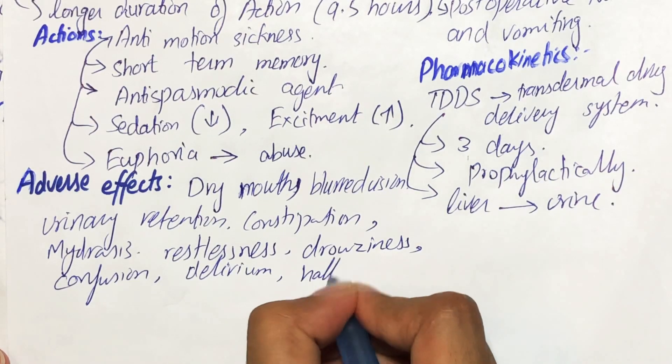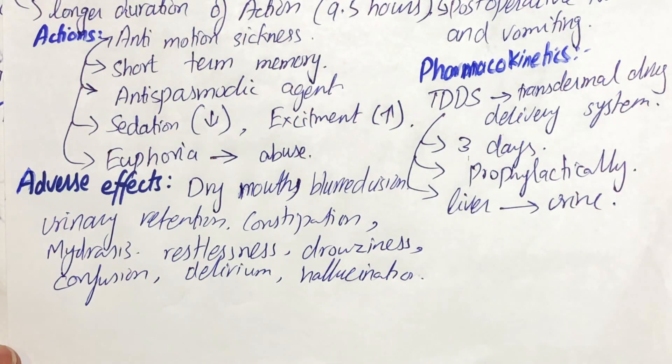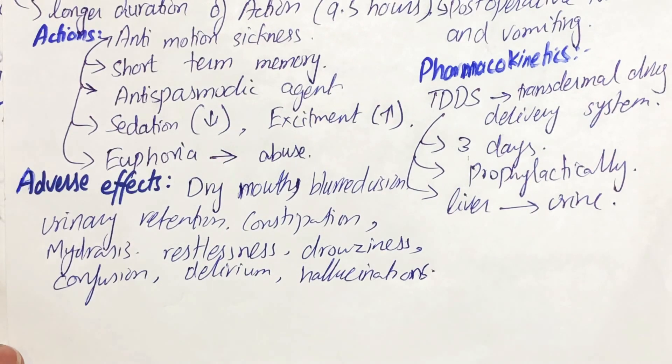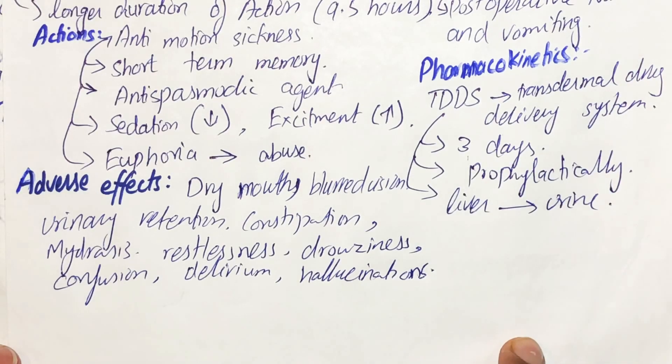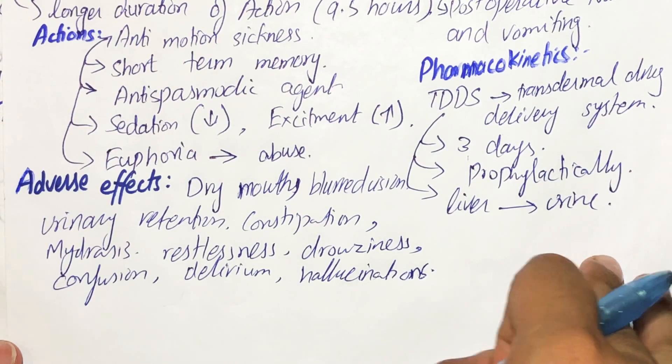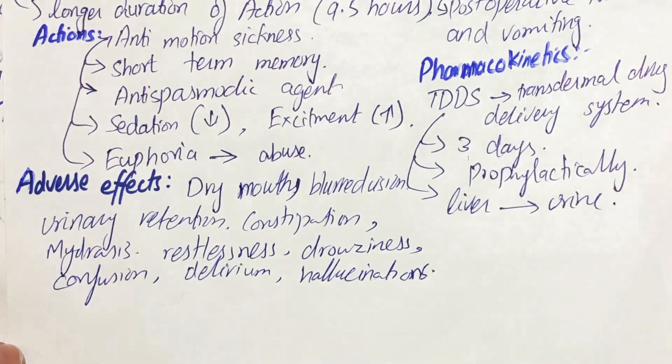Confusion, delirium, hallucination, and many other effects. These all adverse effects are because of antagonizing the muscarinic activity which is being going on inside the body, and in this way all of these effects will be shown to the patient because of the anti-muscarinic activity of this agent, scopolamine.